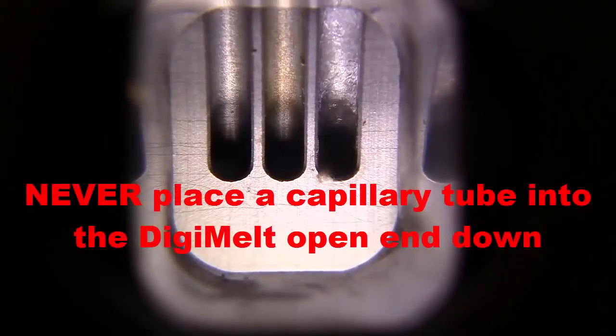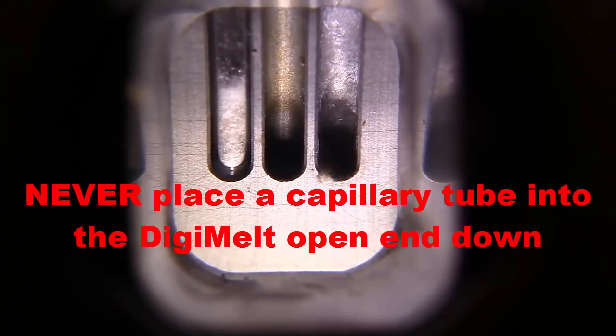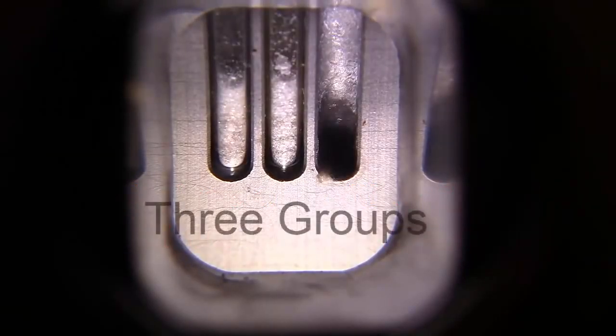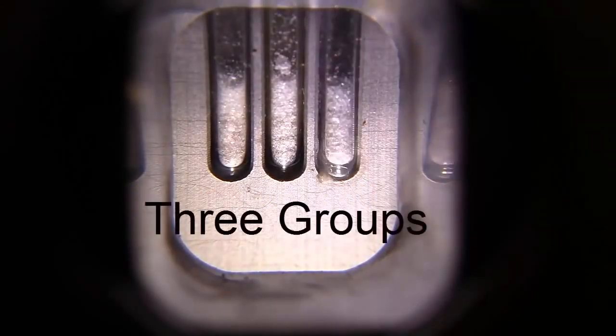Place the capillary tube into the Digimelt. The Digimelt holds three samples at a time. Three groups should go at once so that everyone will finish in a reasonable amount of time.